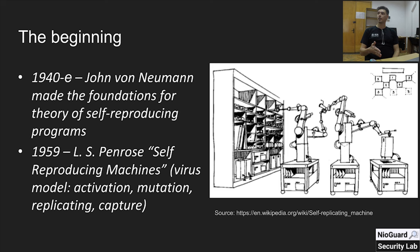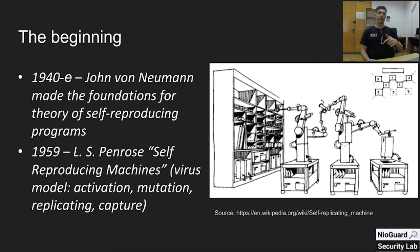Similarly for computer viruses: when a virus gets onto a local computer — for example, through a floppy disk — it is activated, because the reference to the virus is usually placed in the master boot record on the floppy disk. It then starts searching for executable files on the local computer and prepares copies of itself to replicate. These copies, in order to avoid detection by antivirus programs, are obfuscated or encrypted.